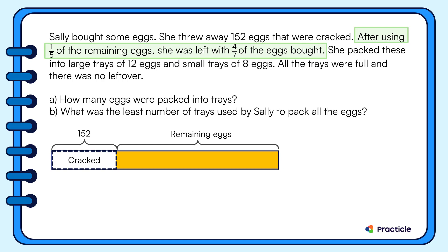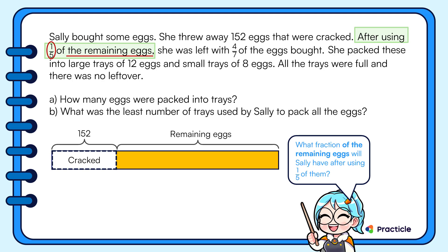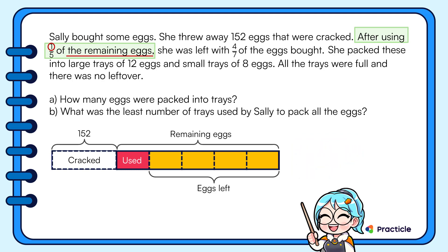We'll break this up into two parts. First, we have the fraction of the remaining eggs. Then, we have the fraction of the eggs that Sally bought. After using one-fifth of the remaining eggs, since the denominator is five, let's divide the remaining eggs into five equal units. Sally used one unit, leaving four units out of five — so she has four-fifths of the remaining eggs left.